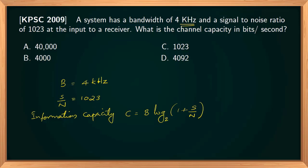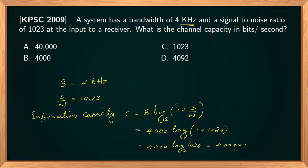The logarithm is taken with base 2. Bandwidth B is 4000 Hz, and S/N ratio is 1023, so 1 + 1023 = 1024. Now 4000 × log(1024) can be written as 4000 × log(2^10) to base 2, which equals 4000 × 10 = 40,000. So the answer is option A, 40,000 bps.